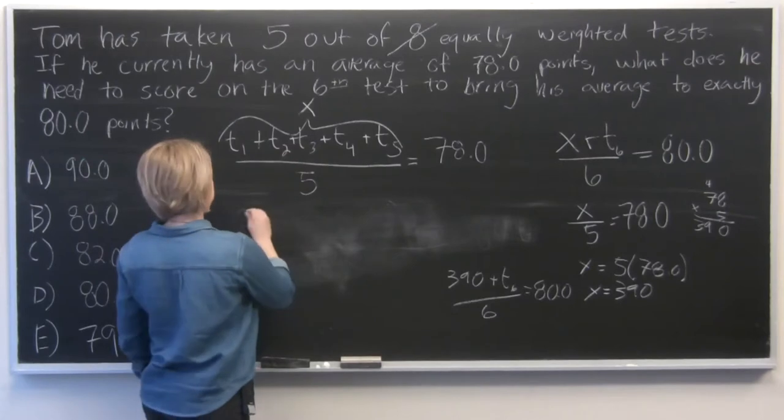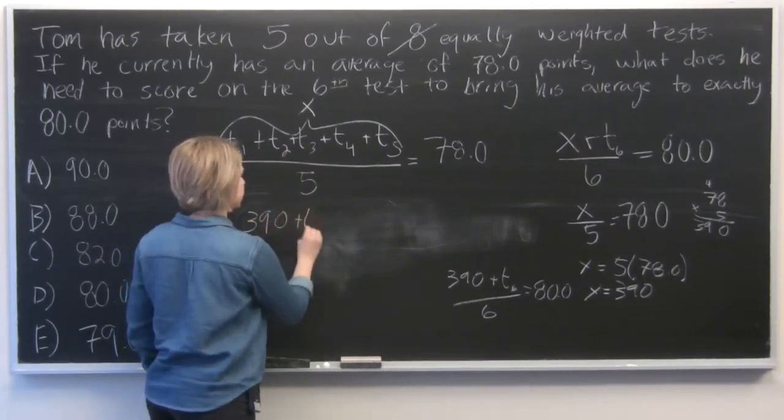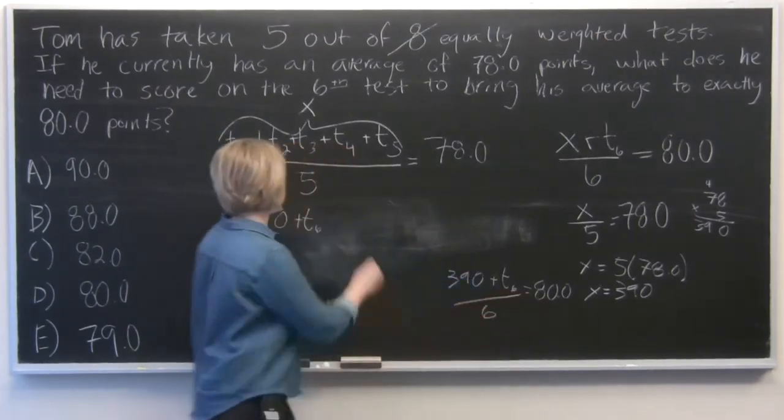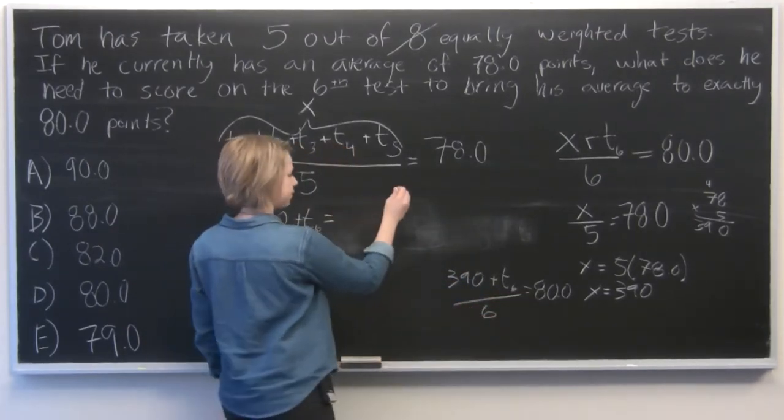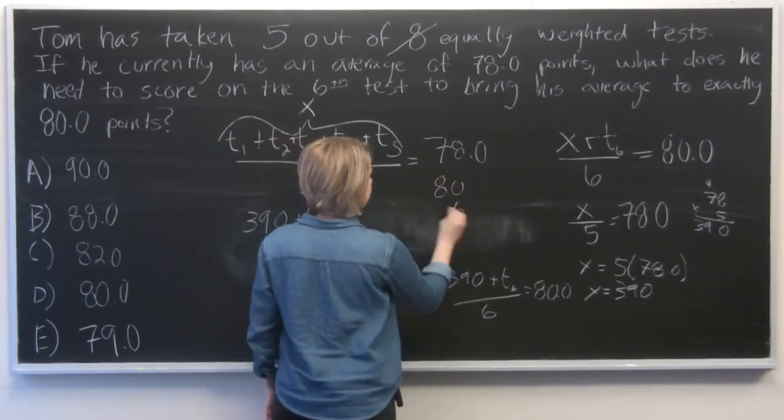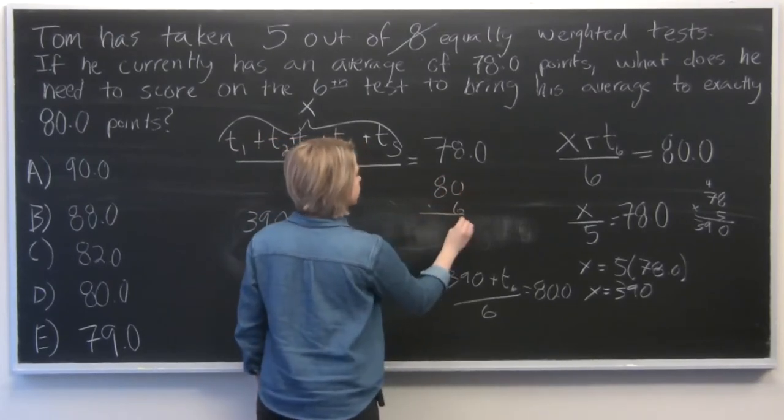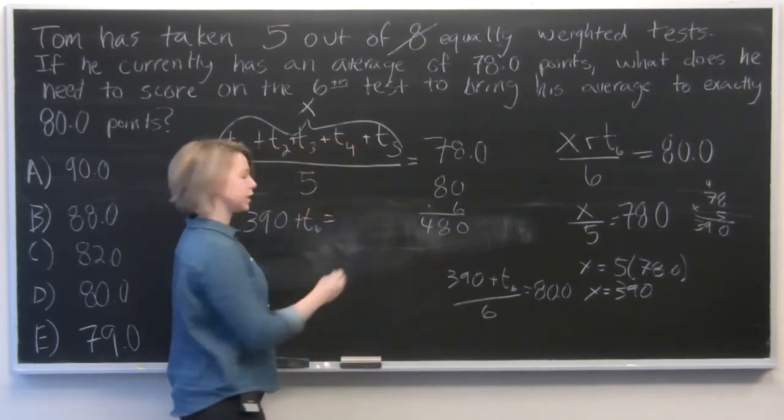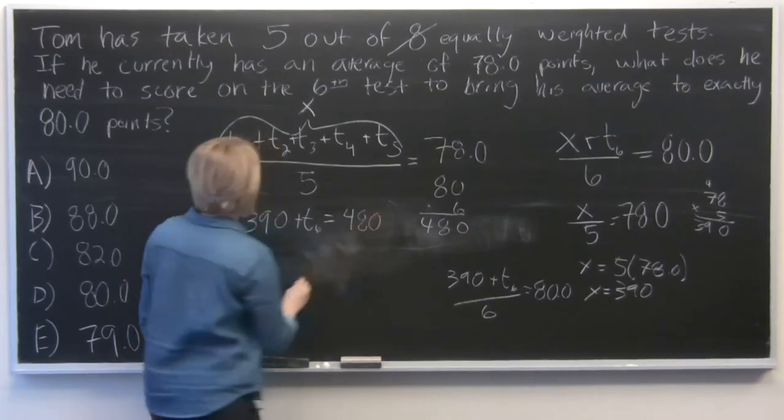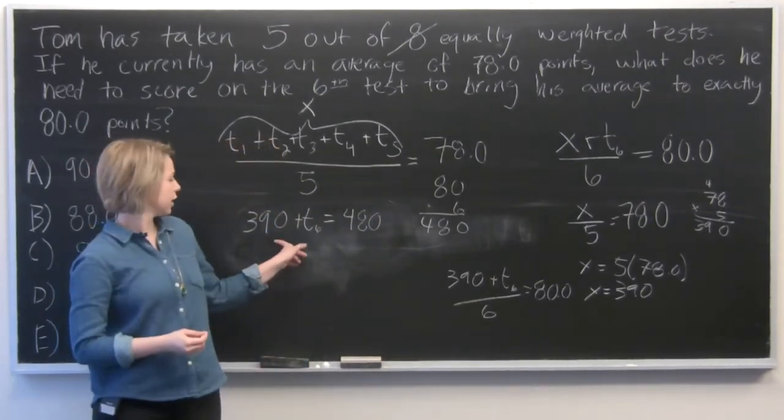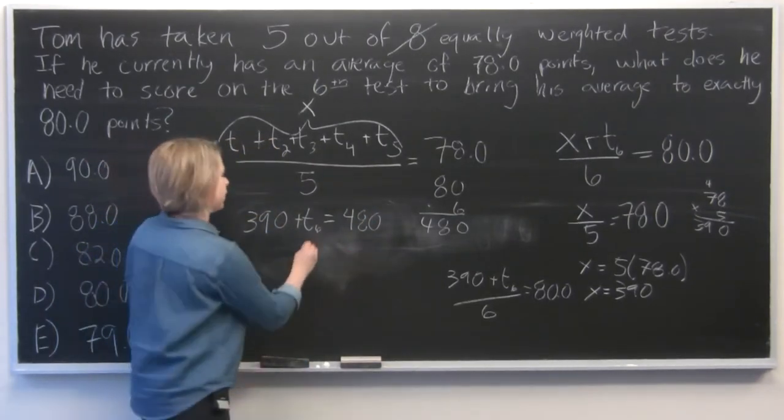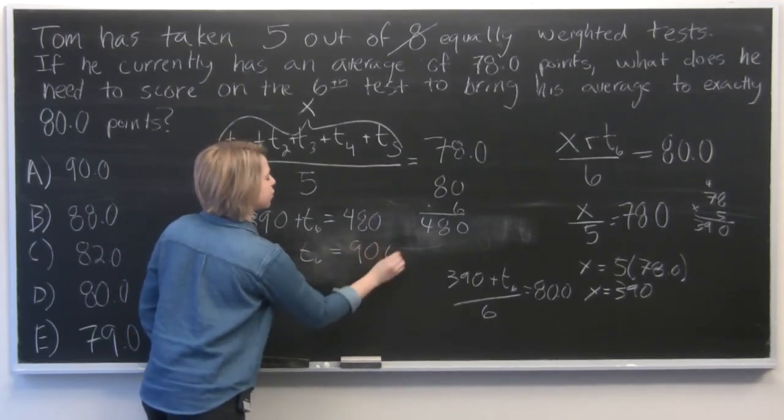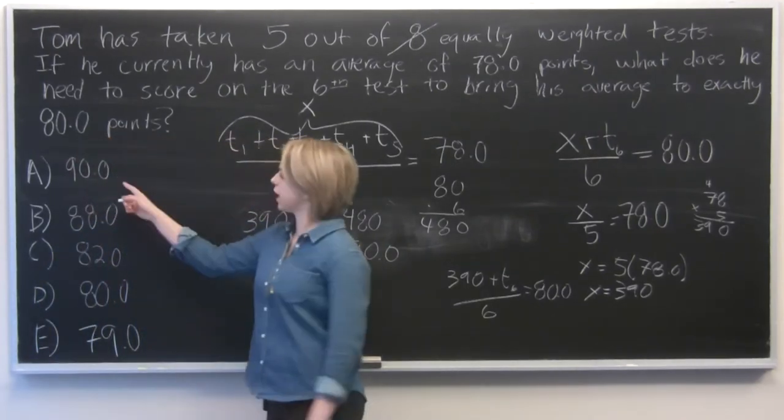So what we need to do is take 390 plus T6. We'll multiply the six through on both sides, equals 80 times 6 is going to equal 480 points. And then we're going to subtract 390 from both sides to find T6 is equal to 90.0 points. And so our answer is A.